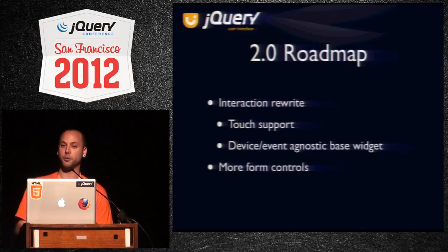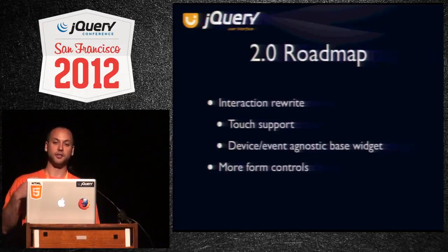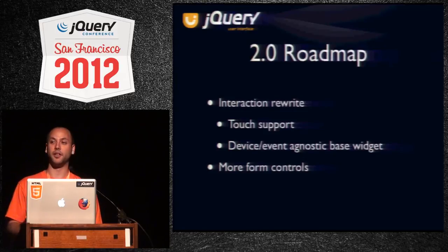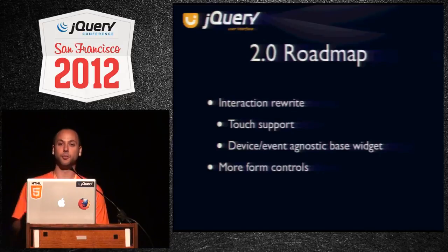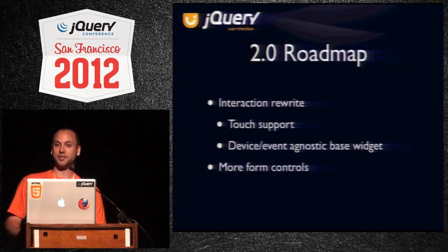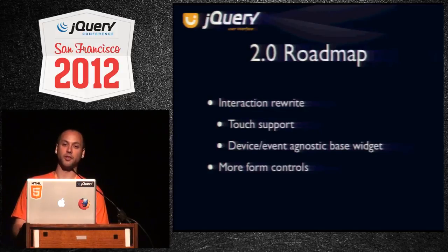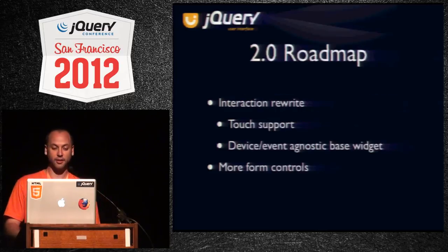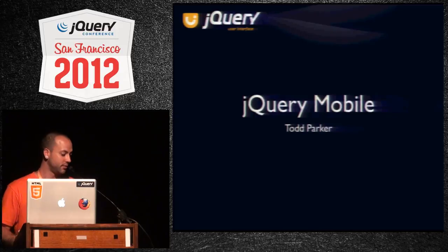We also plan on working on more form controls. We've gotten a lot of feedback that as soon as people put one form control like a date picker, autocomplete, or button in their form, they want to style everything that's a form control, and we don't currently have that. The list on our roadmap is like every possible form control — I probably won't get all of that done for 2.0, but we'll figure out which ones people need the most and start working on those. And that's it for UI. Next up is Todd Parker talking about jQuery Mobile.